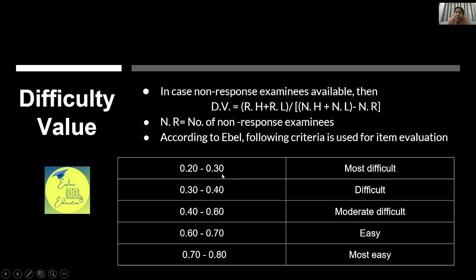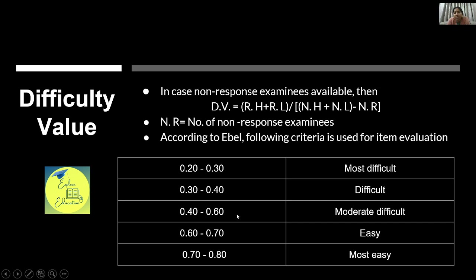Now let's evaluate what difficulty value is acceptable. E-Bell gave us criteria: if difficulty value is between 0.2–0.3, the item is most difficult (only 20–30% answer correctly). 0.3–0.4 is difficult; 0.4–0.6 is moderately difficult; 0.6–0.7 is easy; and 0.7–0.8 is very simple. We want to keep items around 0.4 to 0.6 in our test.